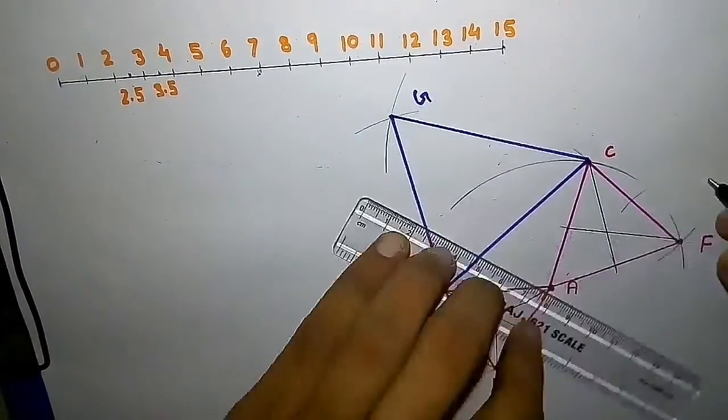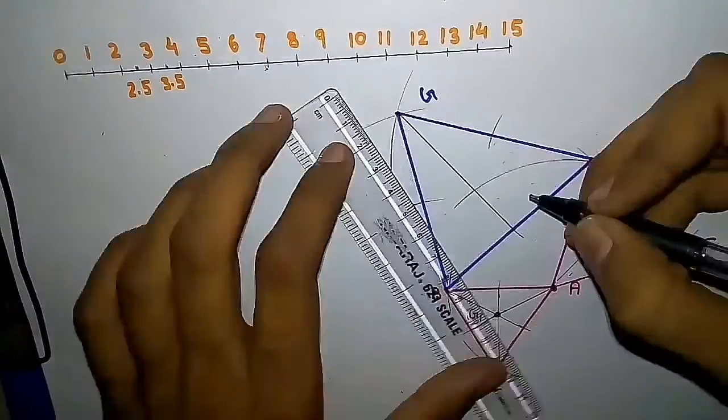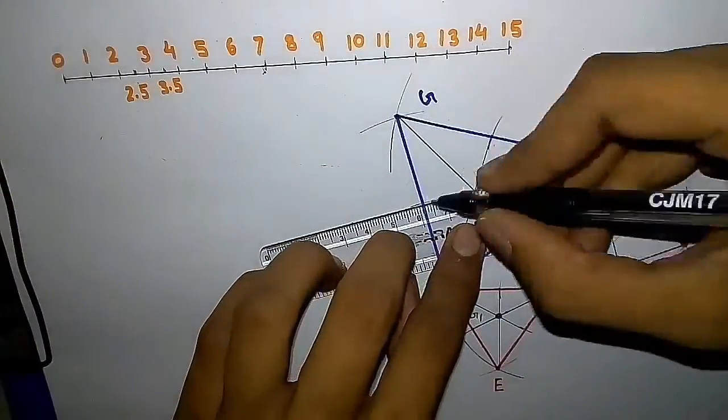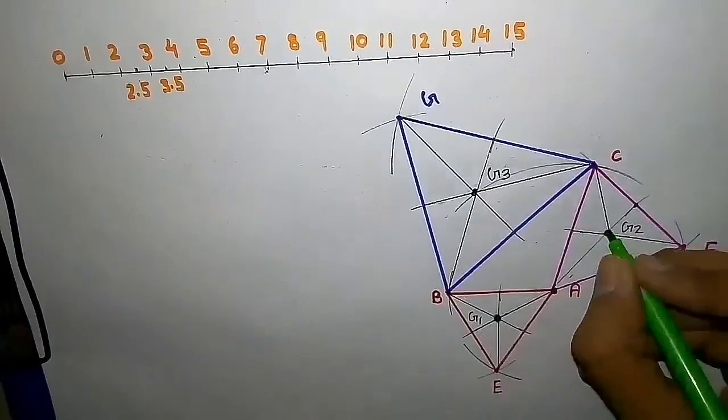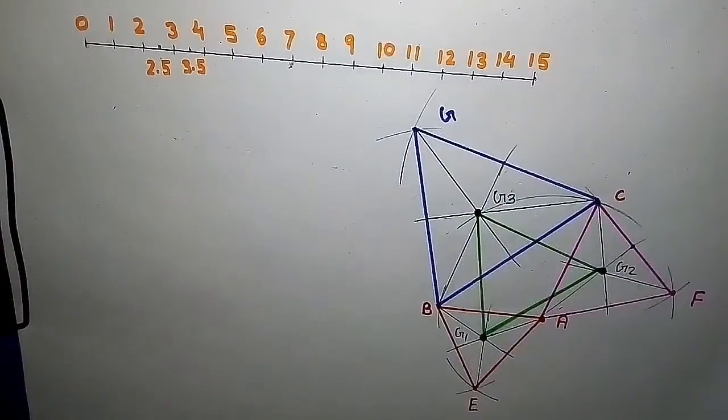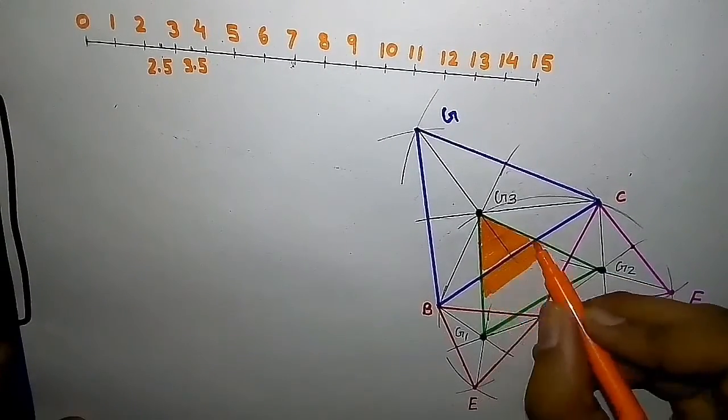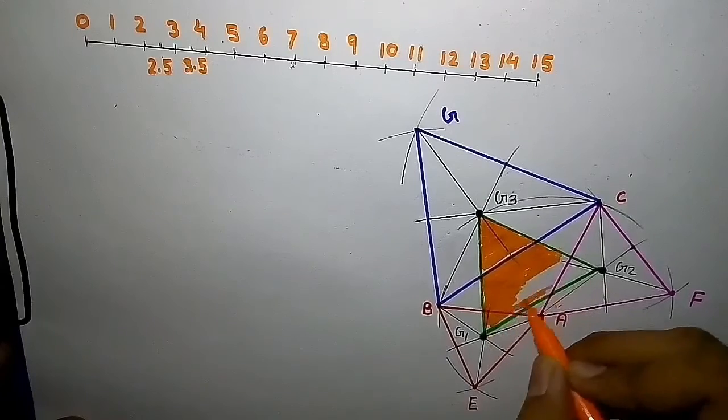By this way, you will have three centroids of the triangles. By connecting these three centroids, you will get one more triangle. This triangle will be an equilateral triangle, and this is called Napoleon's triangle.